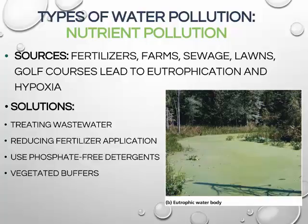We have already discussed nutrient pollution extensively, but it is one of the main types of aquatic pollution. Sources of nutrient pollution include fertilizers on farms, lawns, and golf courses, and sewage. Nutrient pollution leads to eutrophication, which can then cause hypoxic or anoxic conditions.